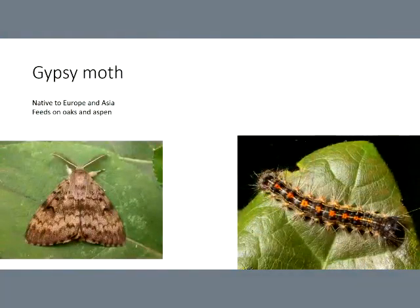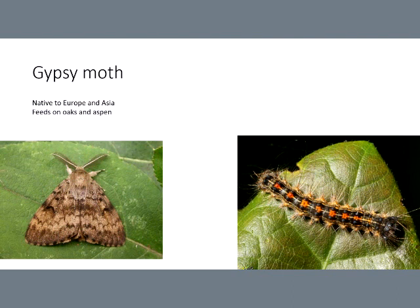Moving on to tent caterpillars and sawfly. Regarding gypsy moth — this was mostly a defoliator, and it's mostly the larvae that we're concerned about. We have three species on this list where we're mostly concerned about the larvae — this is the first one. This one is predominantly oaks and aspen. As a scenario, this is mostly going to be further north, where you'd have defoliation of predominantly hardwood forest. It can affect other things besides hardwoods — for example, hemlocks, pines, and spruces — but it tends to be more on oaks.